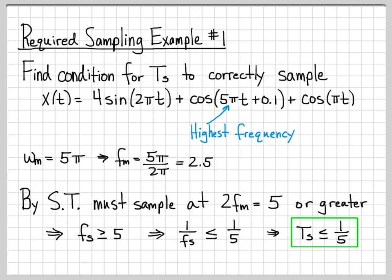At most, we would sample every 1 fifth of a second. But we could always go smaller than that. We could go 1 eighth of a second or a 30th of a second or 0.00001. Any of those work. But this upper bound right here is the condition that we were looking for. T sub s less than or equal to 1 fifth. Alright, let's do another one.